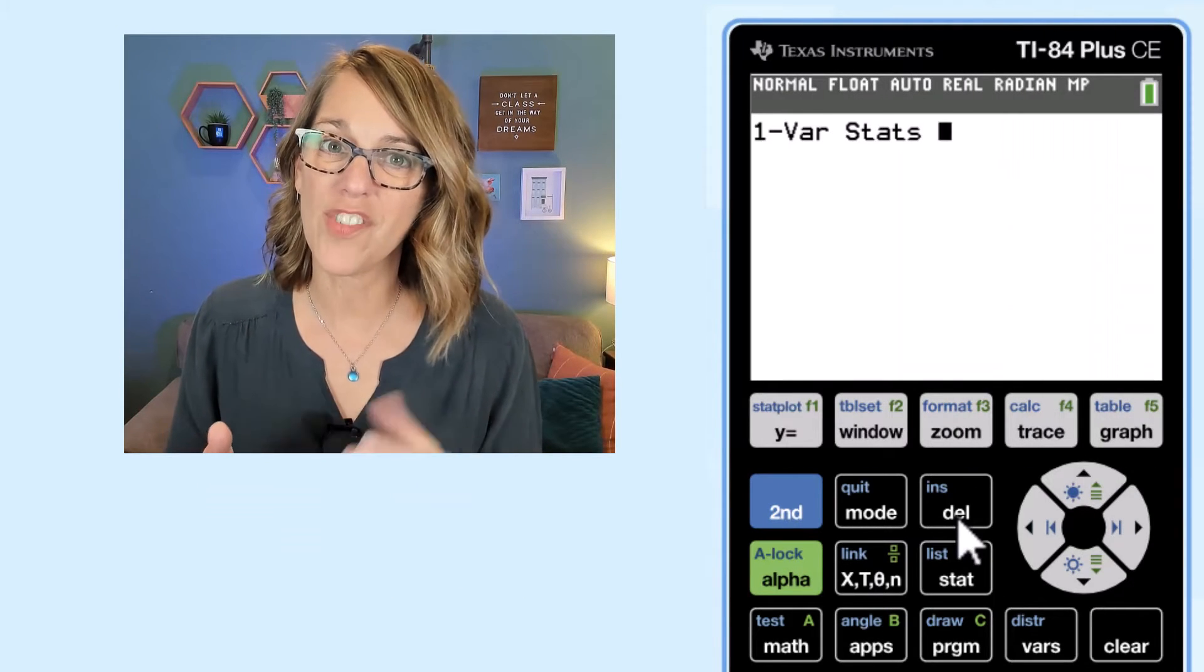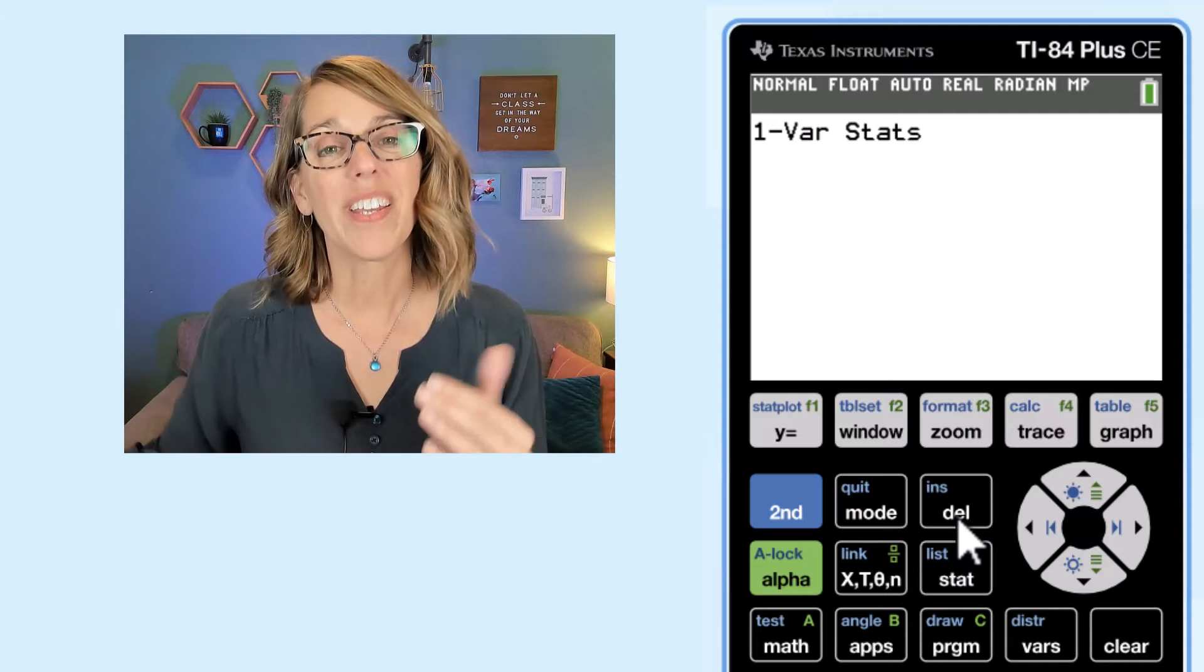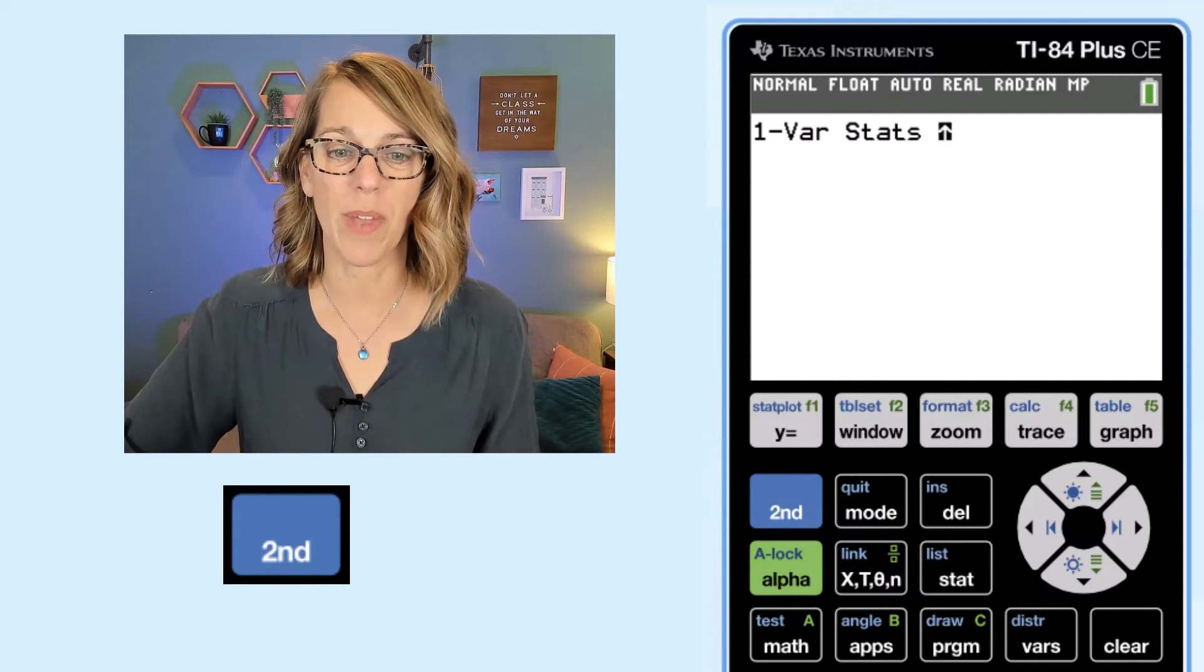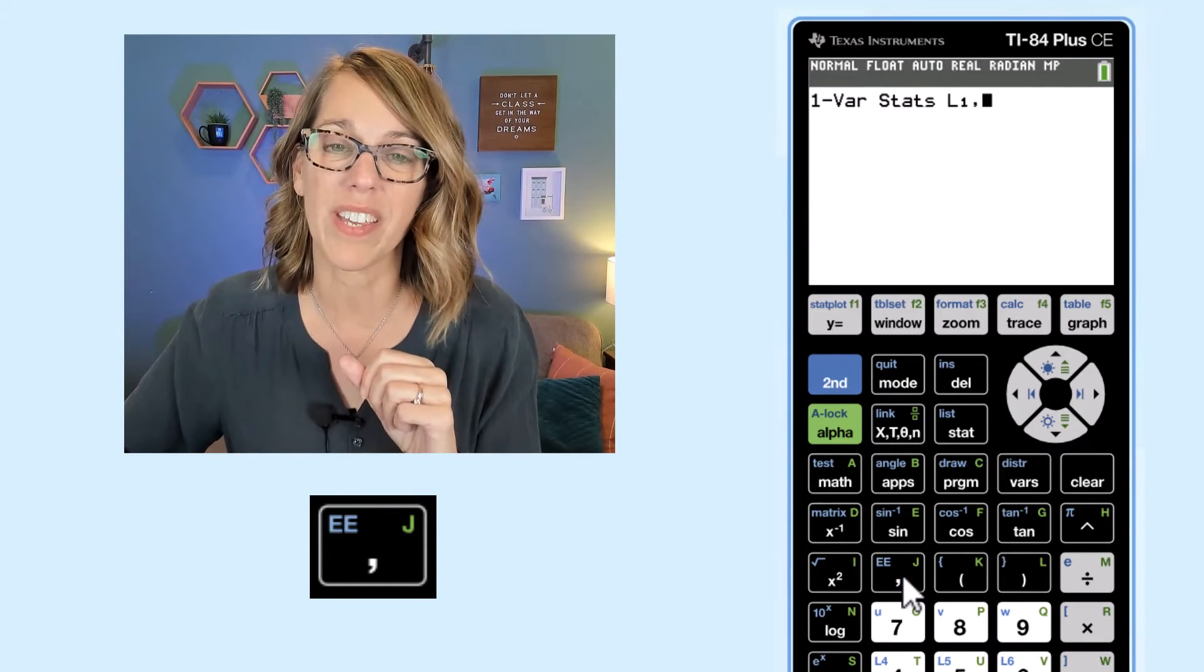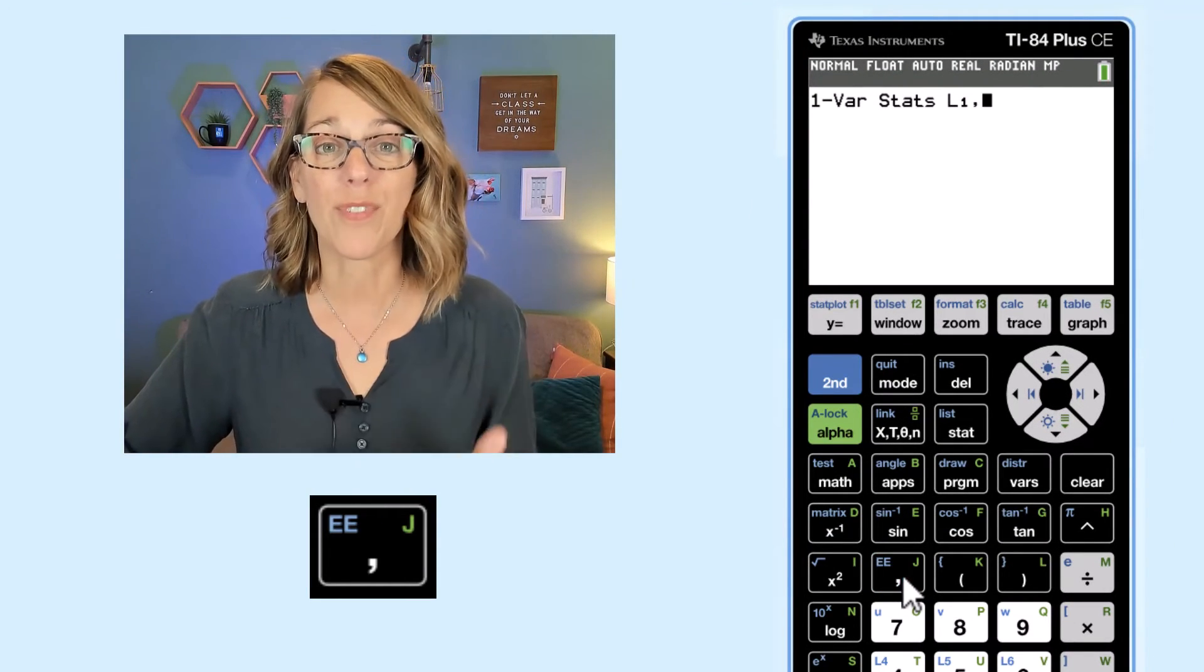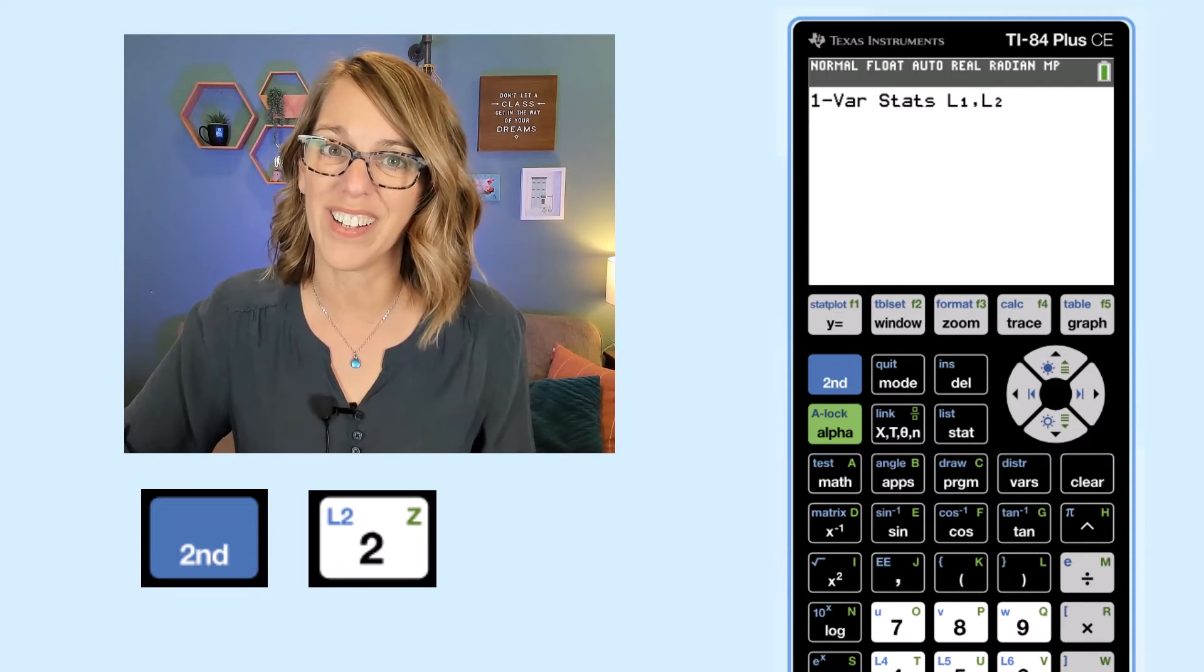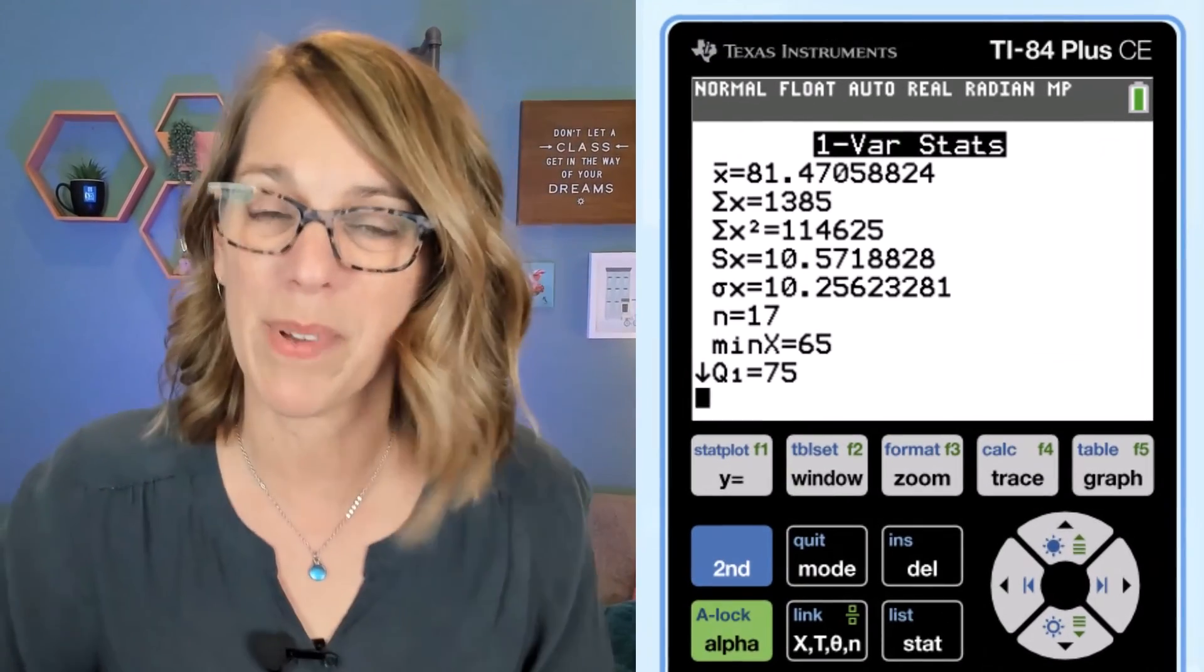Now, if instead of those prompts, it just gave you one variable stats like this, you're going to put in your data list first. Mine was L1. So second followed by one, and then you want your comma, which is right above the number seven. And now I want my frequency list, which was L2. So second followed by L2, and then I hit enter and we get to the very same place.